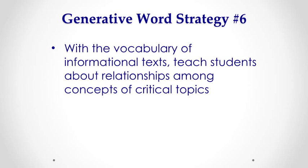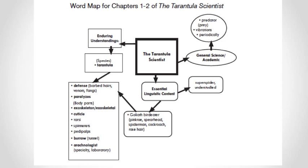The use of new vocabulary is different in typical informational text, which leads to our sixth generative strategy. In informational text, we're teaching students about relationships among concepts of critical topics. With a text like Tarantula Scientist, there are terms about the species of the tarantula that have to do with actions and body parts. The ideas are connected to one another. Defense mechanisms like barbed hairs, venom, and fangs serve to paralyze their victims. These words aren't synonyms, and the author will typically repeat a word like defense mechanism because they're using the words precisely, and there aren't synonyms for these words.